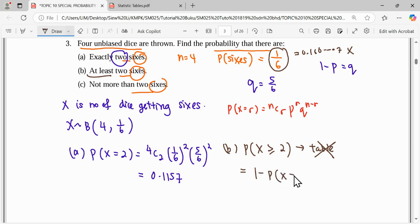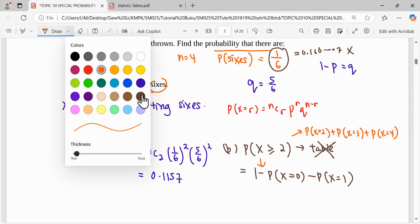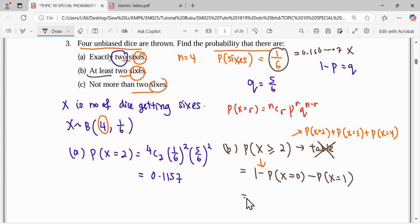If you want more than or equal to two, we need to start calculating X equals two, X equals three, X equals four, up to maximum four. Or we can do it in the reverse way, which is: the overall probability is one, then we minus the cases that didn't happen, which is X equals zero and X equals one. So we have two options. I will do this opposite way.